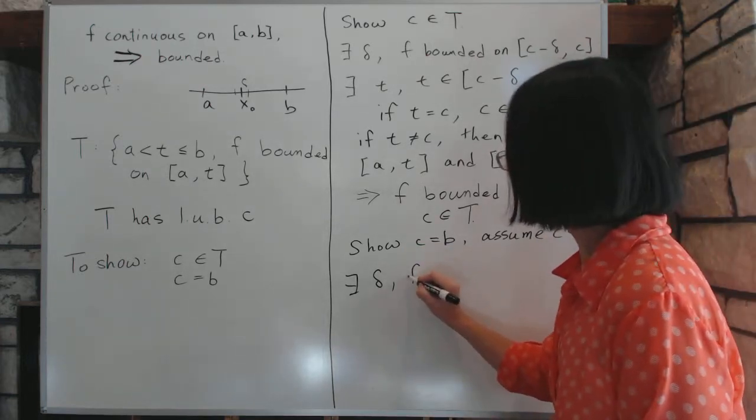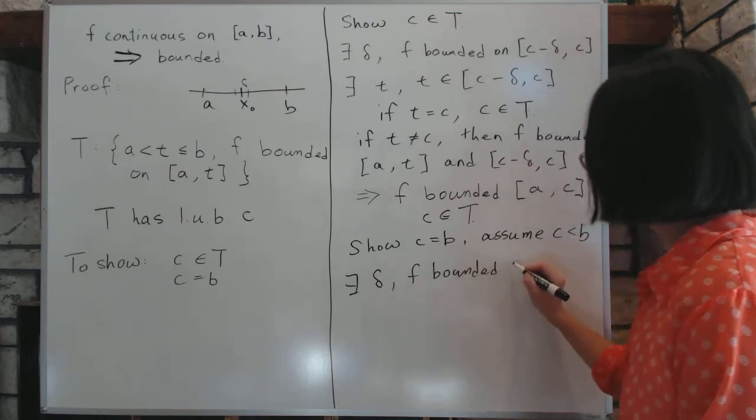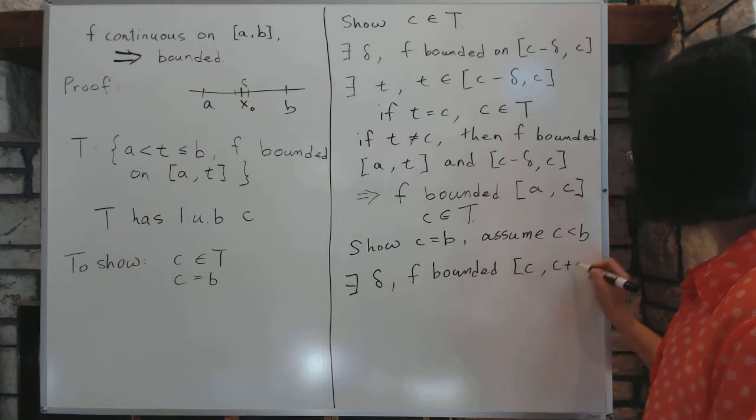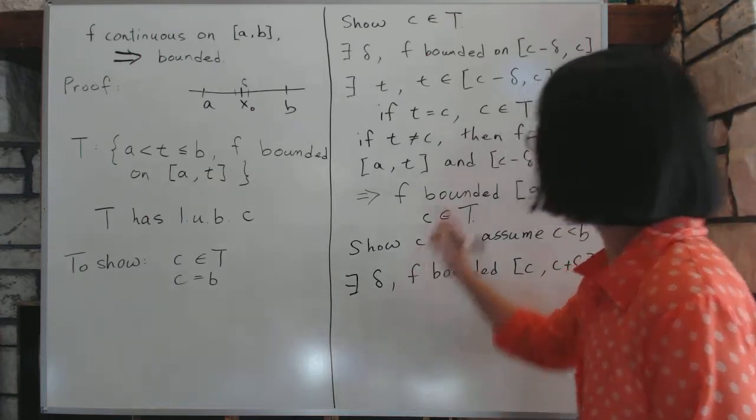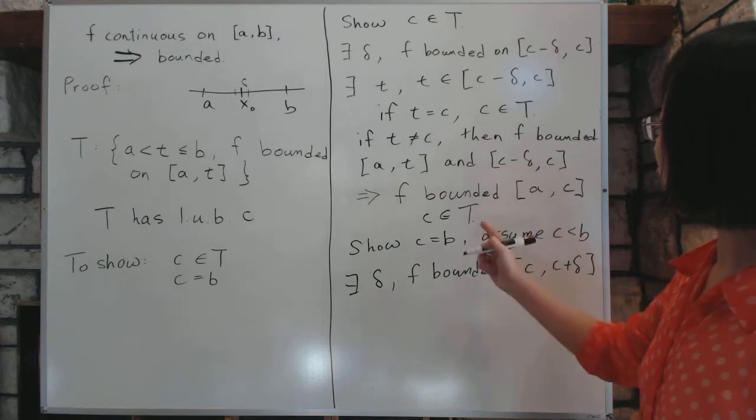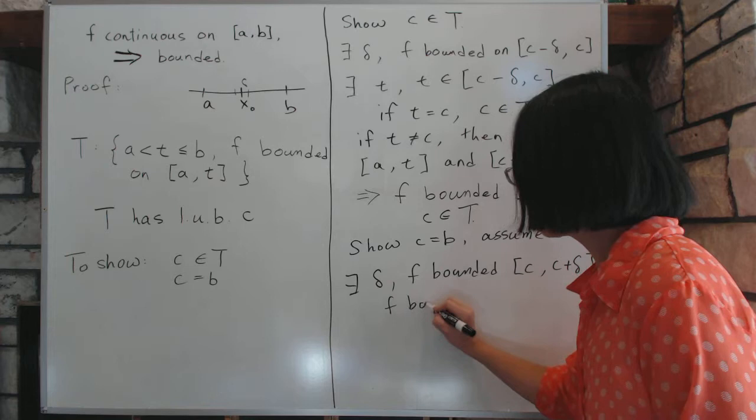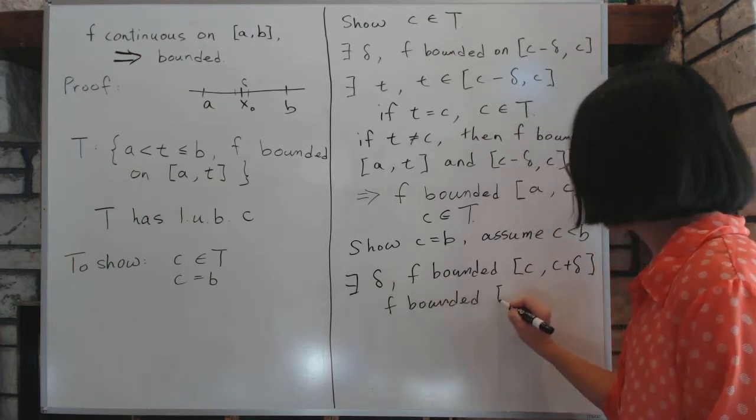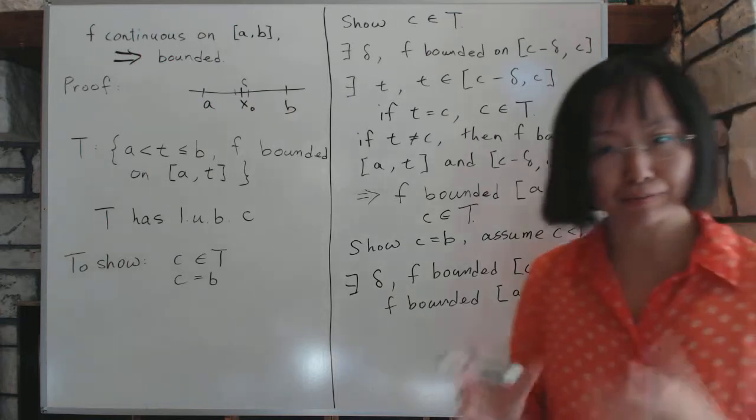There exists a delta, where F is bounded on this interval, from C all the way to C plus delta. Delta is just a very small number. And, F is also bounded, from the previous part of proof, we said that F is bounded from A to C. F is also bounded from A to C, which means, by principle number two,